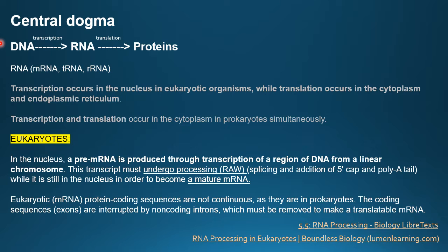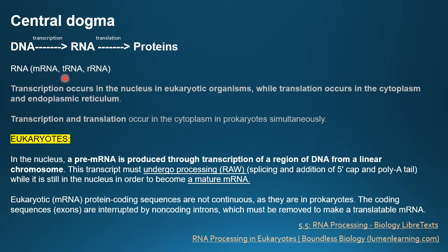We know about the central dogma — the basics taught in first year: from DNA, through transcription, we get RNA, and after RNA is translated, we get proteins. In each and every living cell, this sequence is followed. There are three types of RNA found in living cells: mRNA (messenger RNA), tRNA (transfer RNA), and rRNA (ribosomal RNA). In eukaryotes, transcription occurs in the nucleus while translation occurs in the cytoplasm and endoplasmic reticulum.